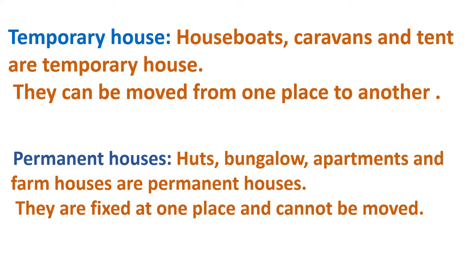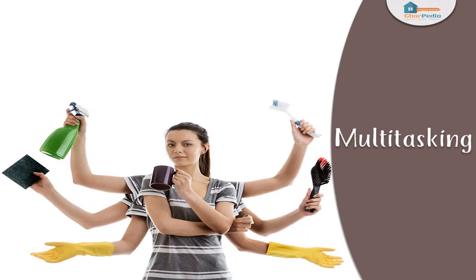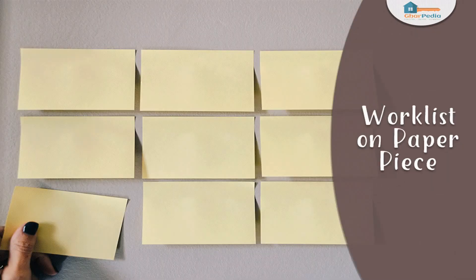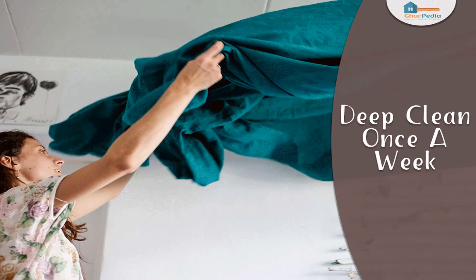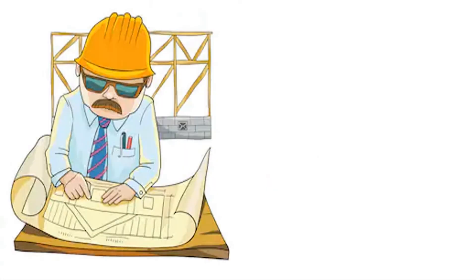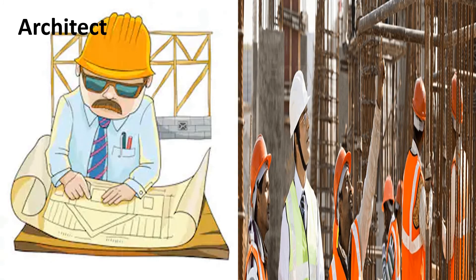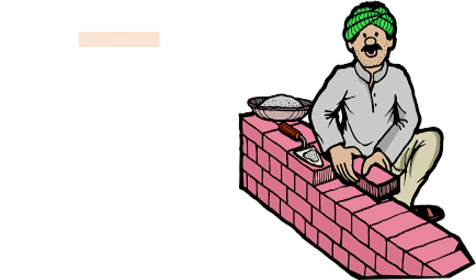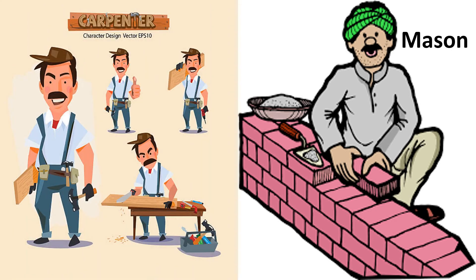We must keep our house clean and make sure nothing gets dirty easily. We need to clean it from time to time. We also need people to build a house. First comes the architect, who makes a drawing of the plan of the house. Next comes the engineer, who guides the mason to build the house. The mason lays bricks and stones to build the walls and roof.